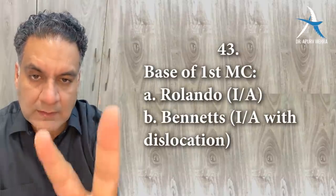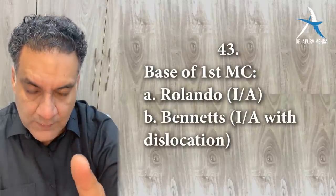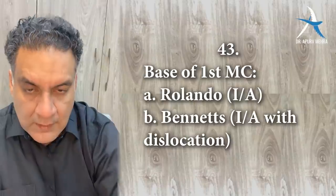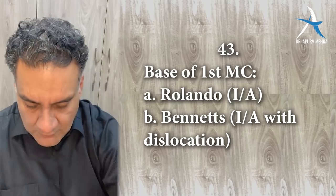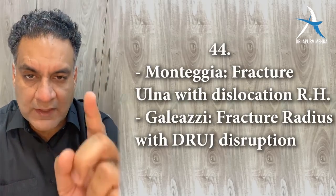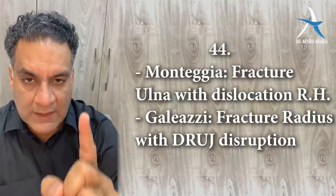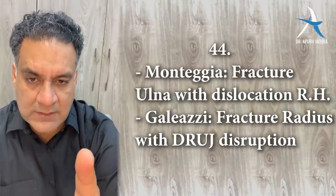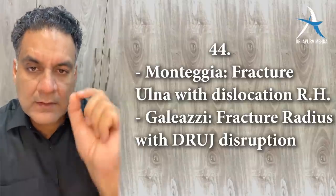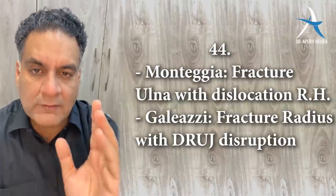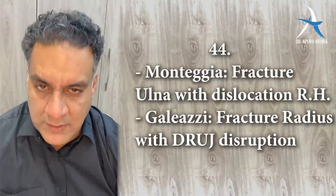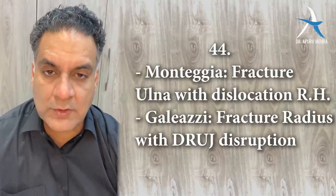Point number forty-three: base of the first metacarpal — two important intra-articular fractures. Rolando is only a fracture; Bennett's is a fracture with a dislocation. Point number forty-four: ulna fracture with dislocation of the radial head is Monteggia fracture — examiners love it. Galeazzi is a fracture of the lower end of radius with dislocation of the distal radio-ulnar joint. Galeazzi is more common than Monteggia.